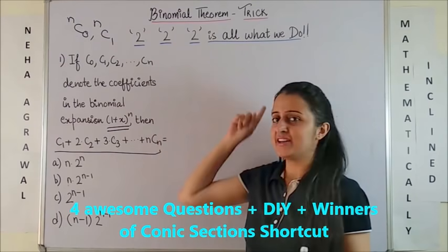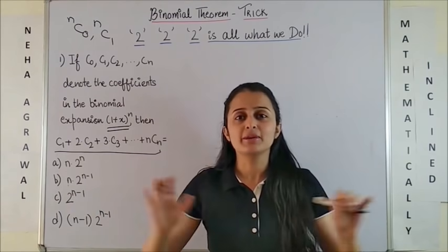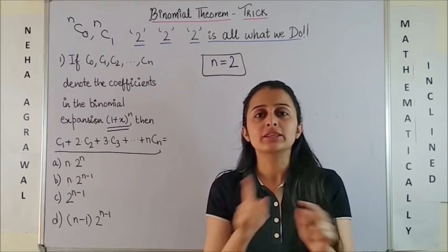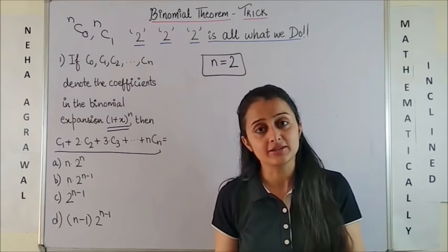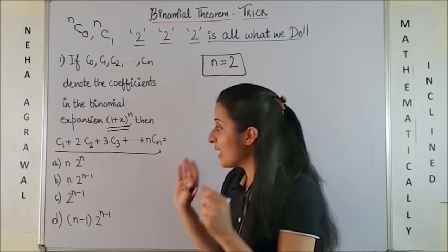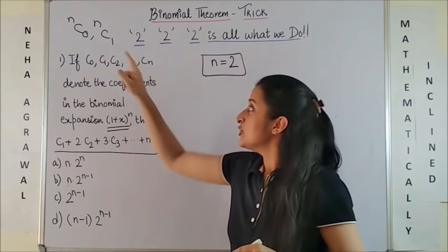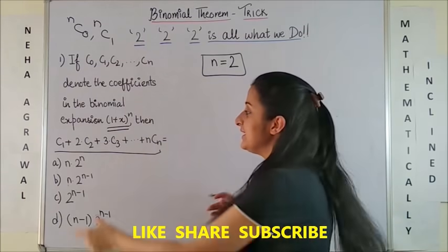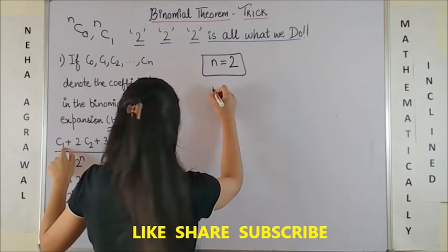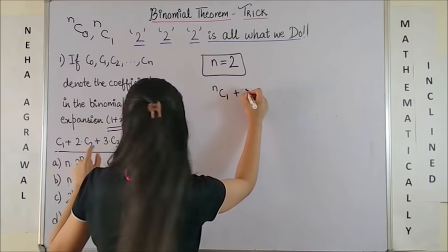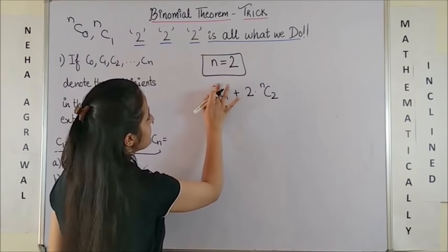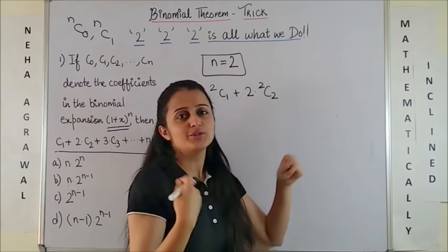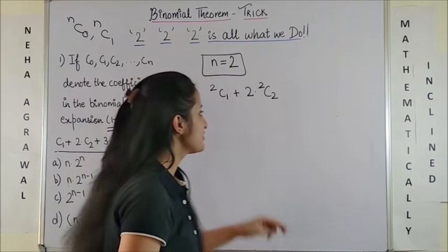You would have gotten the hint by now, 2-2-2 is all what we do. Simply take your n equal to 2. The moment you take n equal to 2, please note this doesn't mean that you have to take only the first two terms. This basically means you have to consider the terms till the time your n and the number over here they match. Yes, for this question, coincidentally, it happens to be the first two terms.